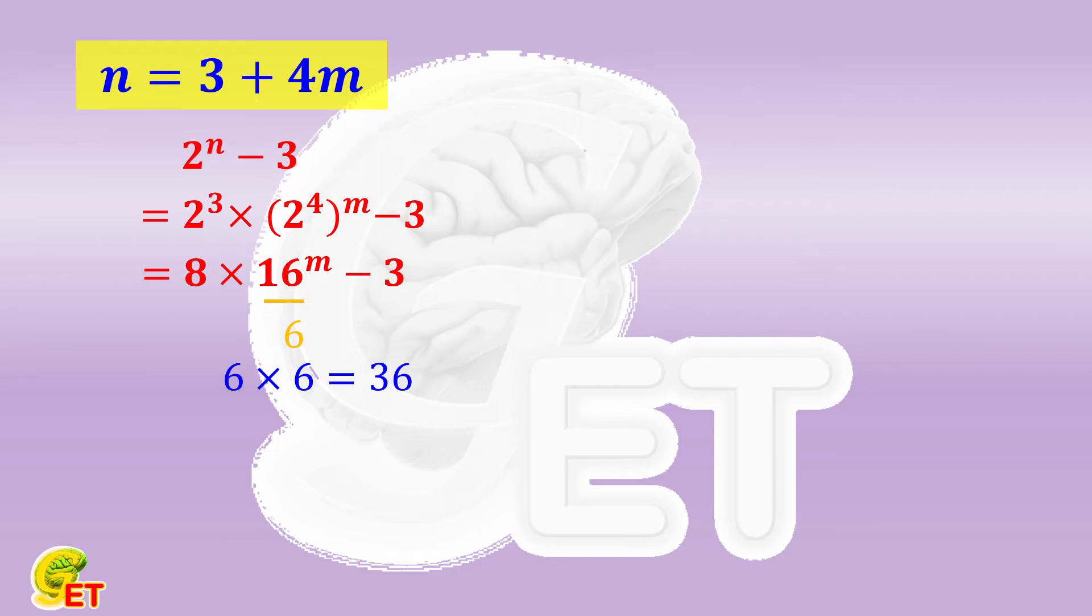No matter how many times 16 is multiplied by itself, the digit of the result at 1's place is still 6. Then multiplied by 8, the digit becomes 8. And then subtracted by 3, the digit becomes 5. So in this situation, 2 to the nth power minus 3 must be divisible by 5.